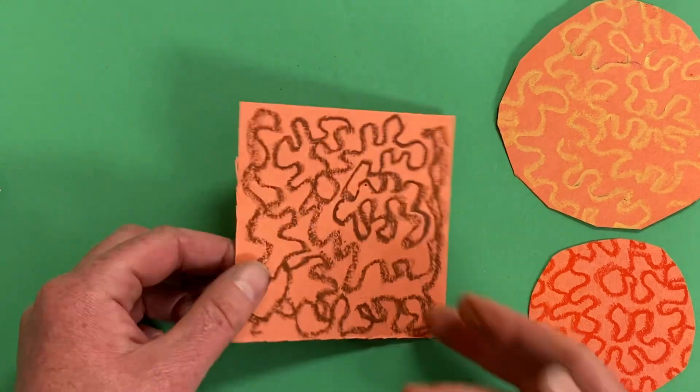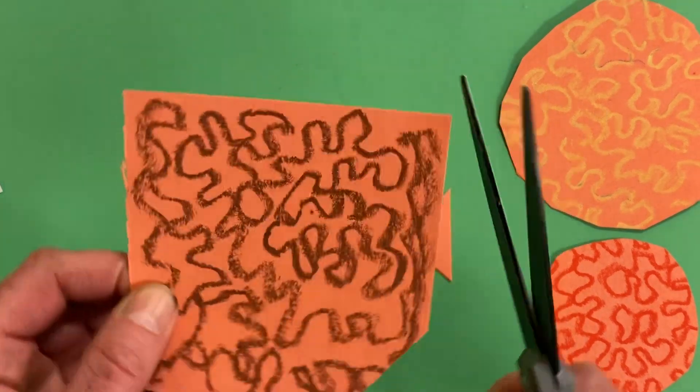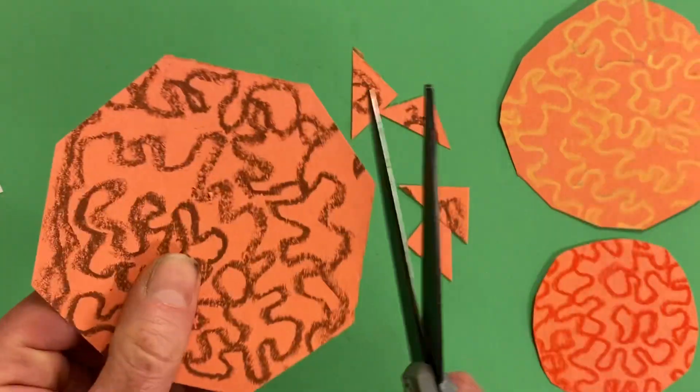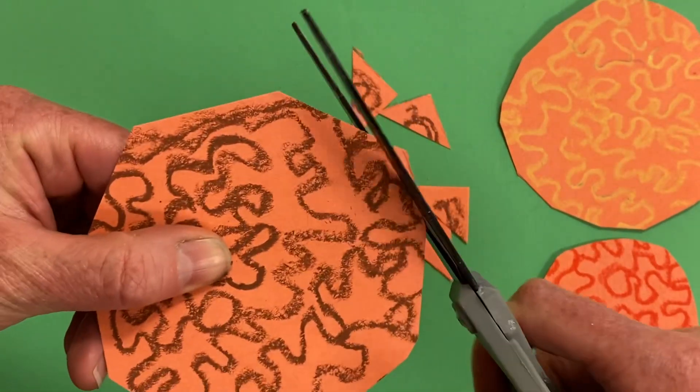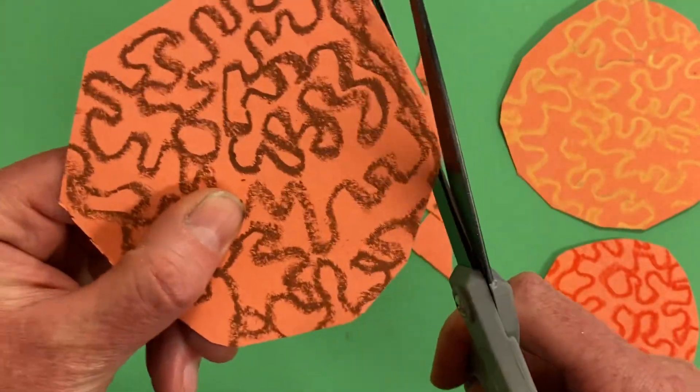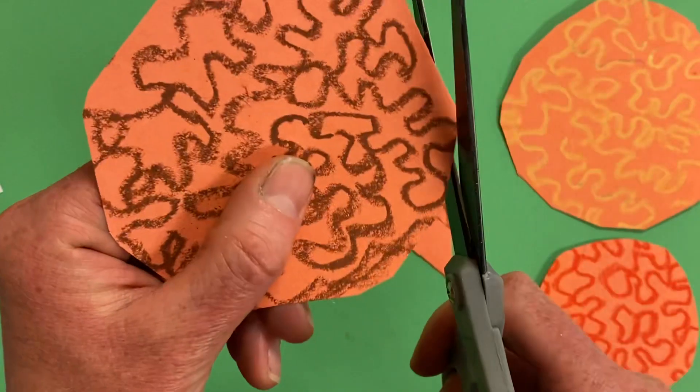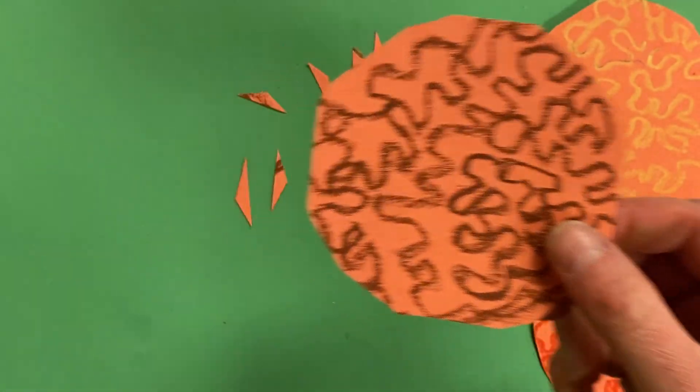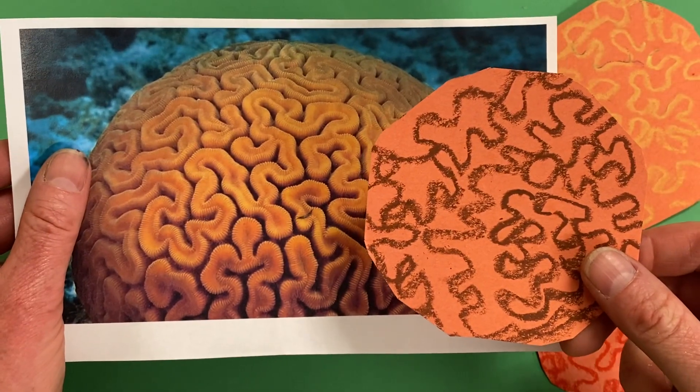Now once I've done that, I'm going to cut off the medium-sized triangles. And then I cut off my tiny triangles - tiny, tiny, tiny, tiny. And I have some grooved brain coral.